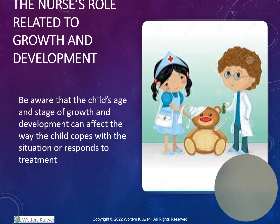Understanding factors, influences, and normal expected patterns related to growth and development of the infant, child, and adolescent is important. Talking to the child at their level of development will gain you more information and help build that trust relationship. Teaching and working with the family caregivers helps make sure the child will receive appropriate care when discharged. The nurse needs to be aware that the child's age and stage of growth and development can affect the way the child copes with the situation or responds to treatment.